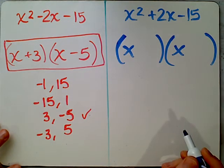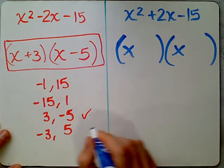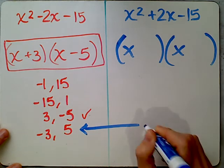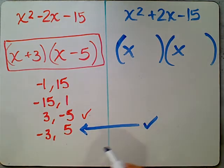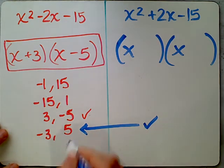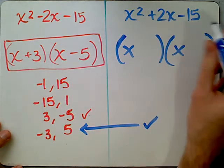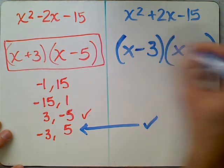But now we're looking for the factors to add up to a positive 2. So we can go over here and look at this set of factors. We have negative 3 and positive 5. We add the negative 3 to the positive 5, and we would get positive 2. So you can go ahead and put those factors here.